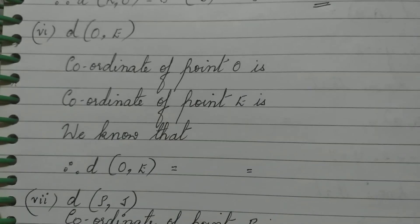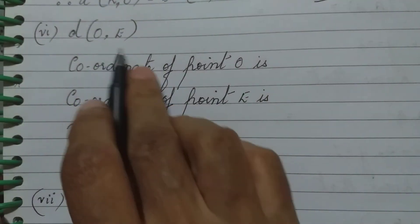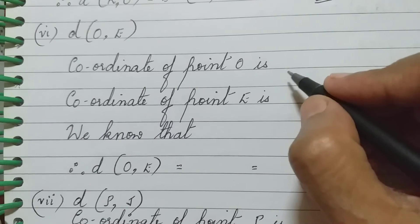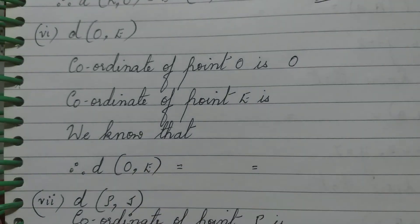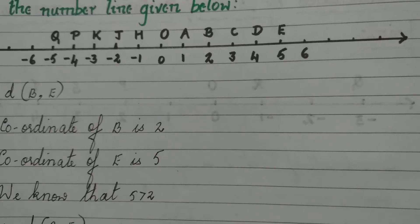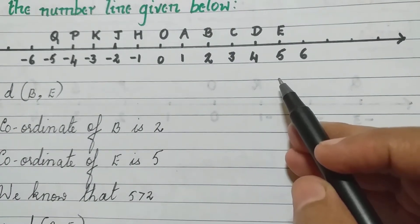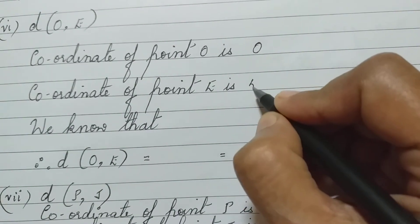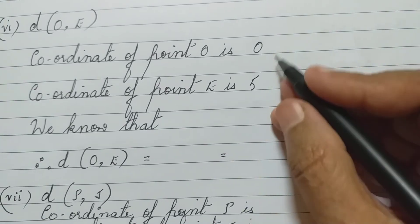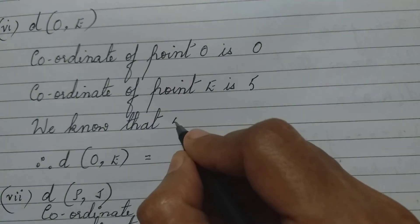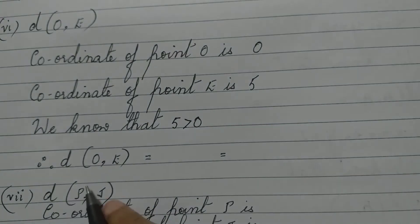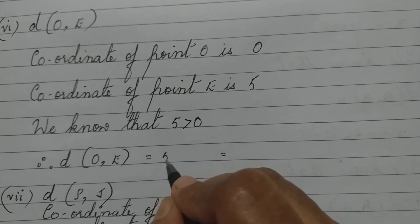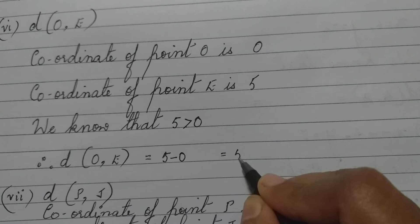Sixth sub-question: distance between points O and E. The coordinate of point O is 0, and the coordinate of point E is 5. We know that 5 is greater than 0. Therefore, the distance between O and E is 5 minus 0, which is 5.